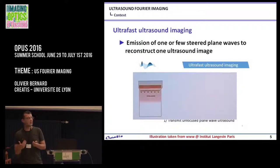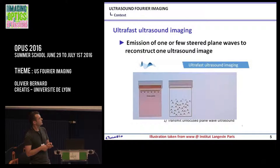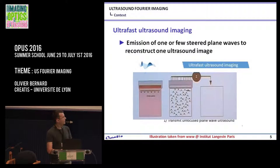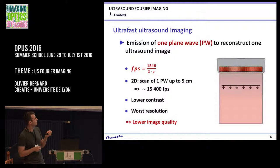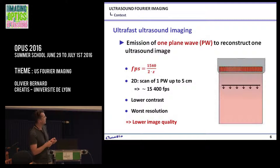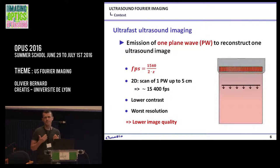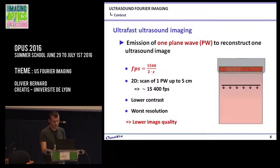You emit a plane wave, then you wait to receive the information. By doing so, you don't need anymore the number-of-lines coefficient. So actually, if you go up to 5 centimeters, you can obtain 15,000 frames per second. But of course, since you deliver less energy into the medium, you will get lower contrast and worse resolution compared to the conventional approach — globally, a lower image quality.